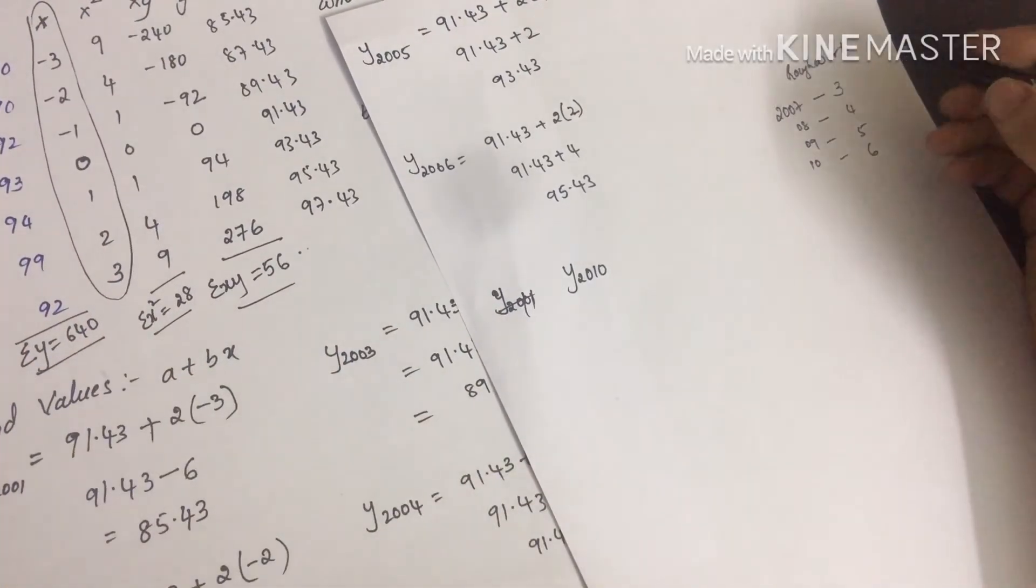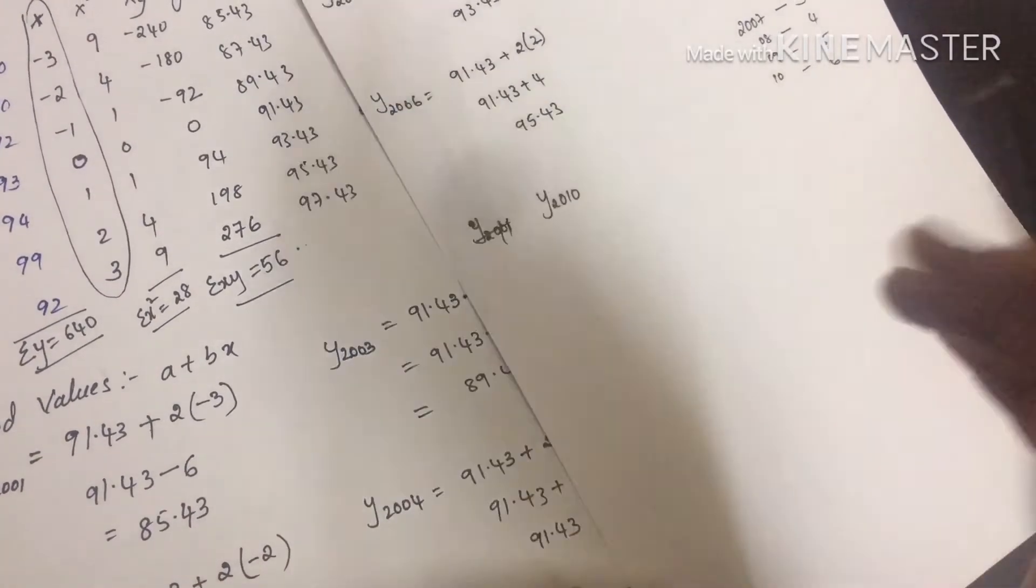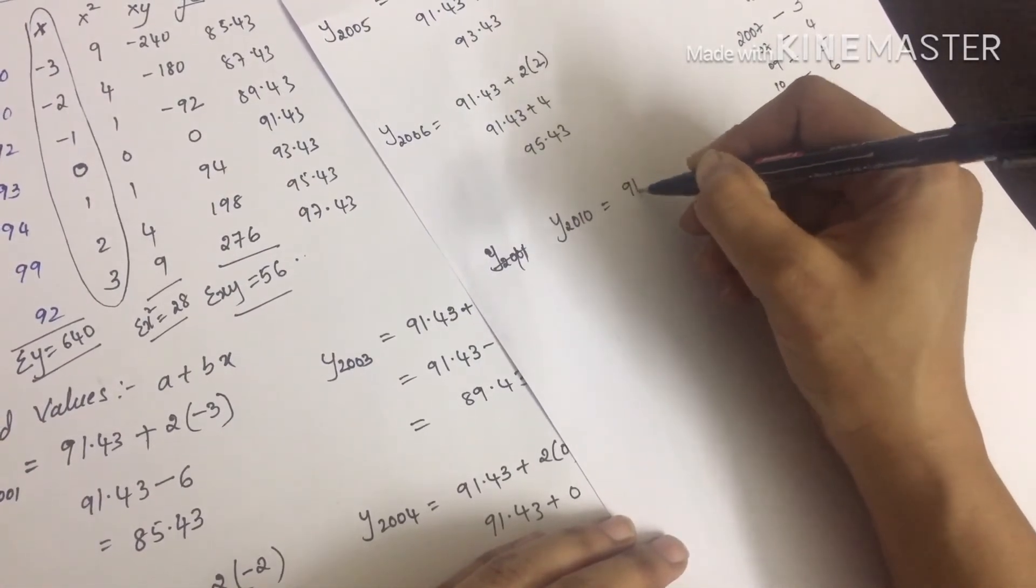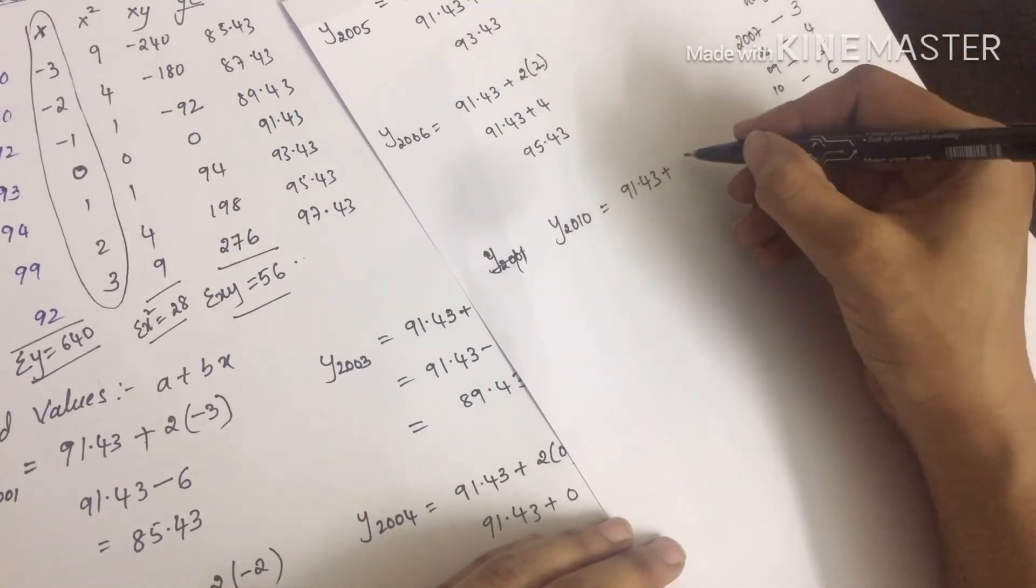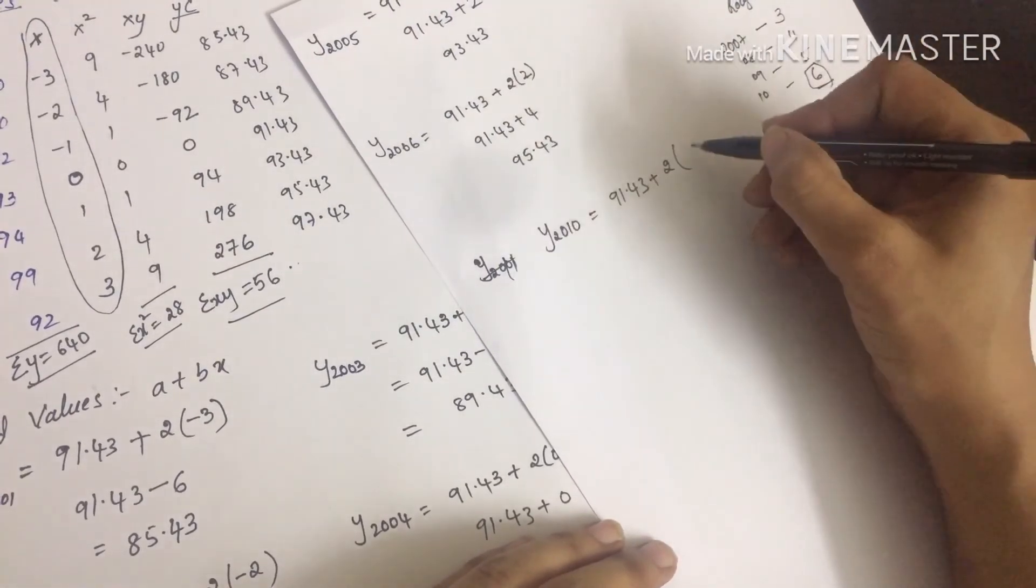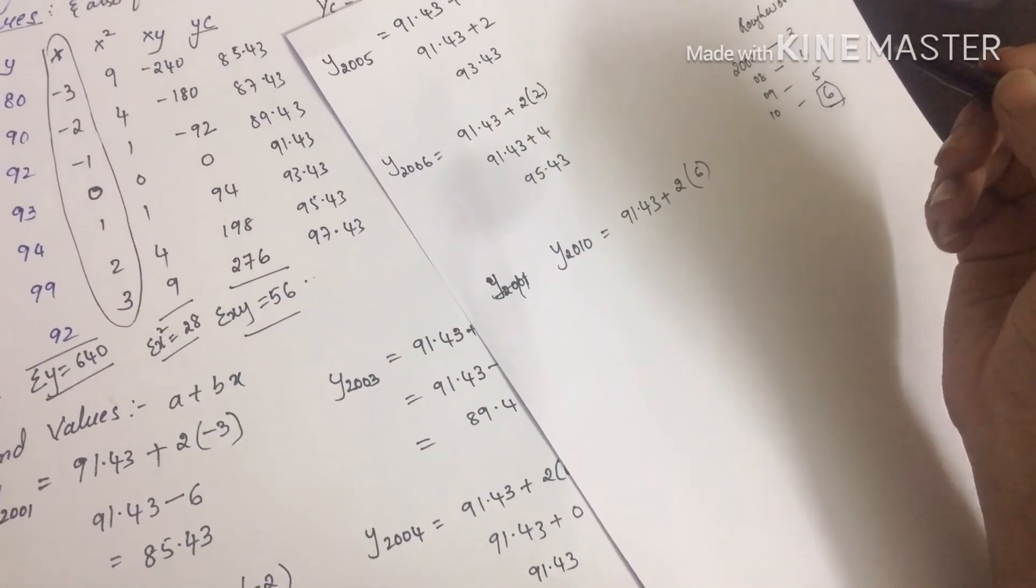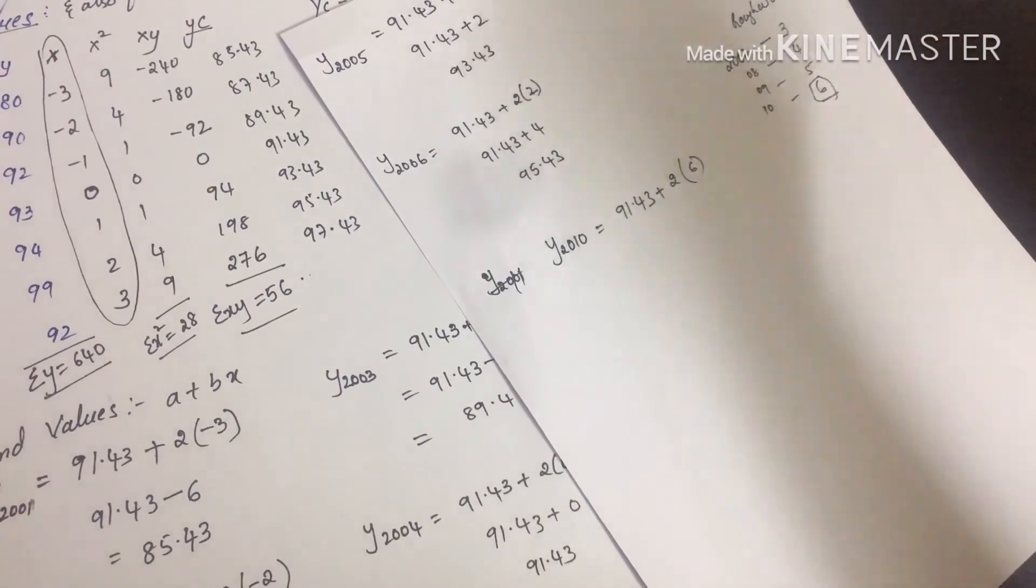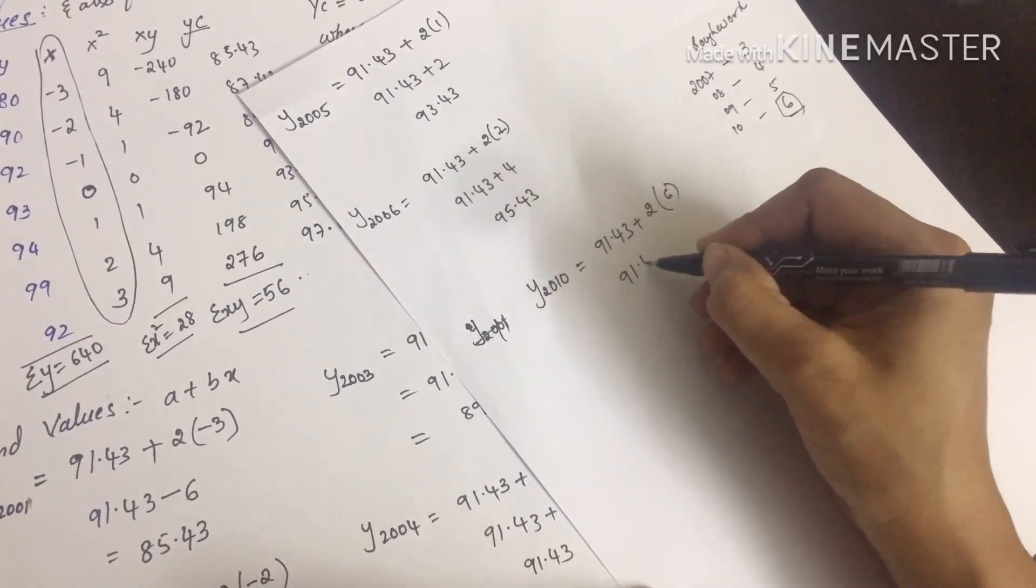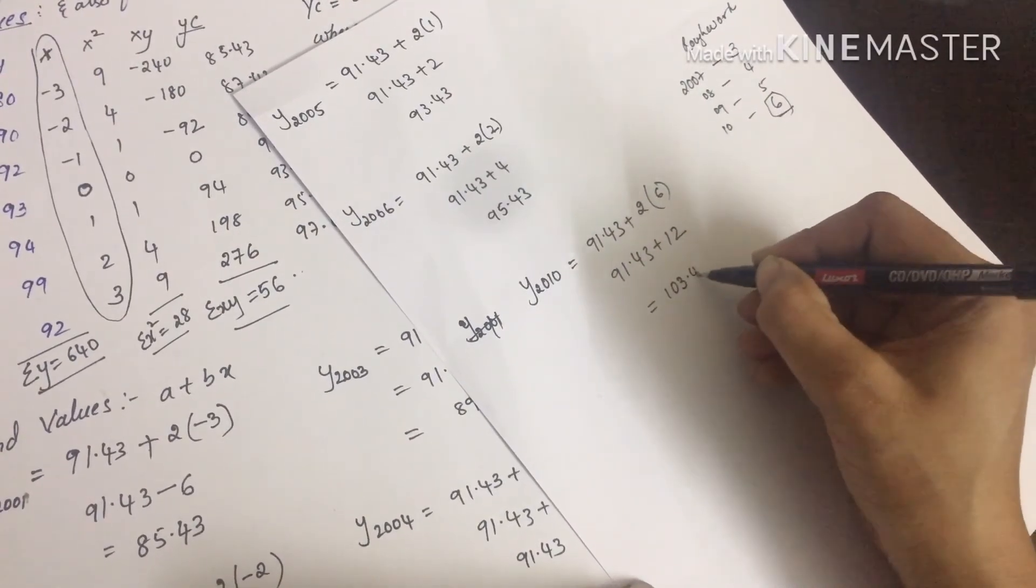Working it out: 2008 would be 4, 2009 would be 5, and 2010 would be 6. So what is x for 2010? It's 6. The a value is 91.43 plus b value is 2, and x value is 6. Why are we taking 6? Because they asked you to find out the trend value for 2010. So 2010's x value is 6. Therefore, 91.43 plus 2 into 6 equals 91.43 plus 12, which equals 103.43.